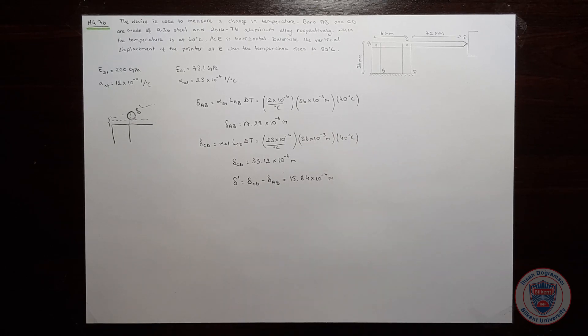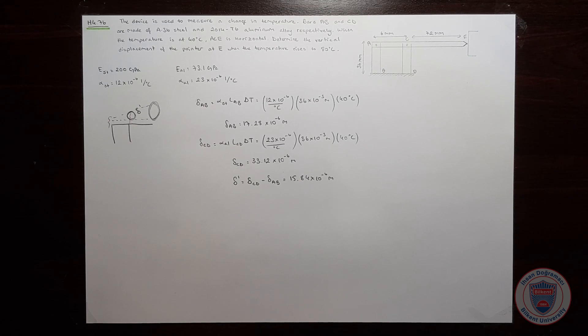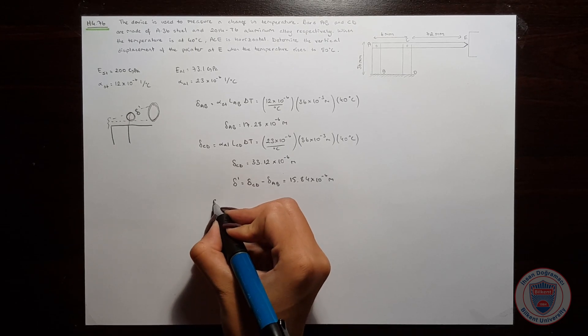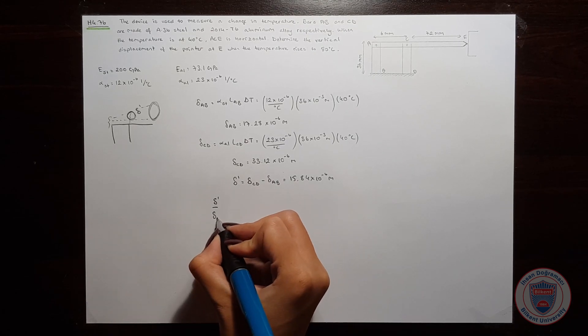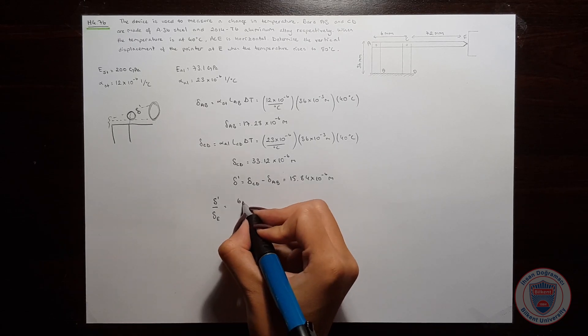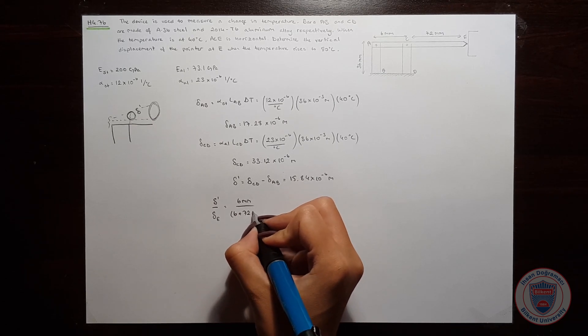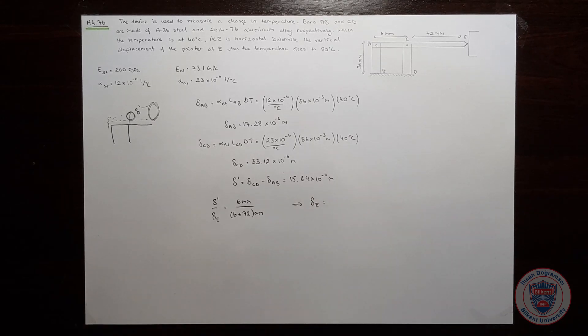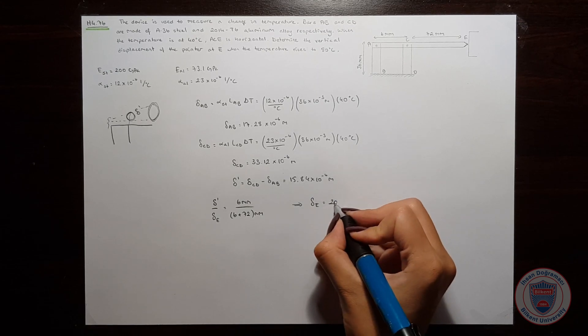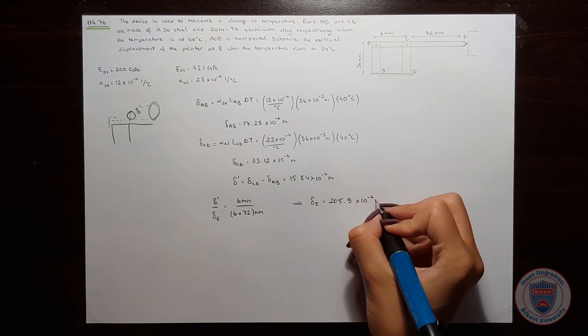Now we should find the displacement of the pointer E. It will be this length. We can use similarity. So we know that delta_E over delta prime will be equal to 6 millimeters over 6 plus 72 millimeters. And we got the displacement of E as 205.9 times 10 to the power of minus 6 meters.